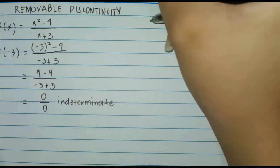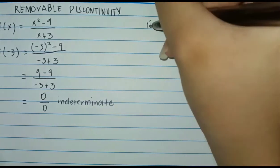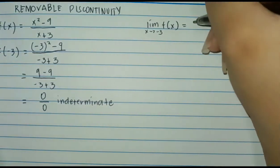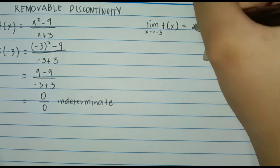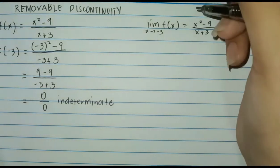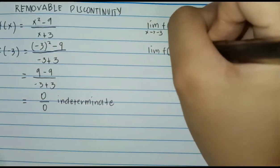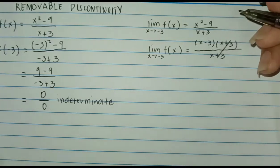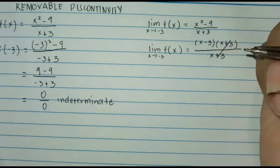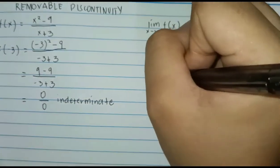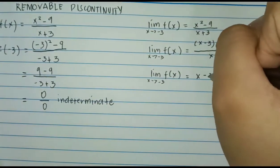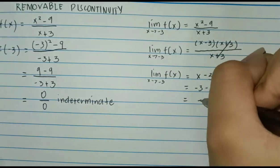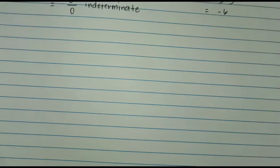Next, the limit of f of x as x approaches negative 3 equals x squared minus 9 over x plus 3. We factor x squared minus 9 over x plus 3, giving us the limit of f of x as x approaches negative 3 equals x minus 3 times x plus 3, over x plus 3. We cancel out the common factor x plus 3 in the numerator and denominator, leaving x minus 3. So the limit of f of x as x approaches negative 3 equals negative 3 minus 3, which equals negative 6.